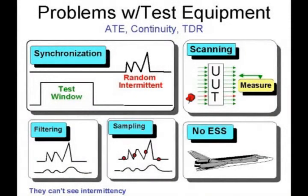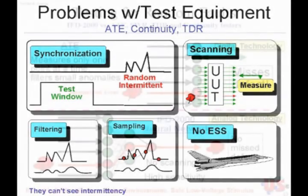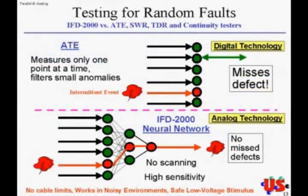For instance, what is the probability that you will be testing the right line in a system that might have hundreds of circuits, and what is the probability that your measurement device will actually be taking a reading and be sensitive enough to pick it up at precisely the same time that an intermittent event occurs? This is the critical factor.